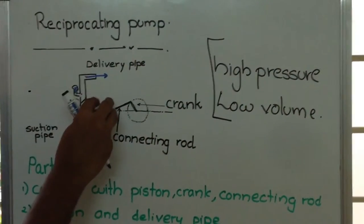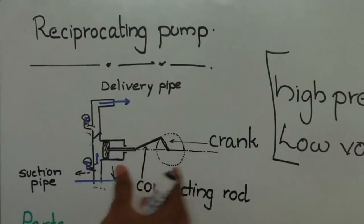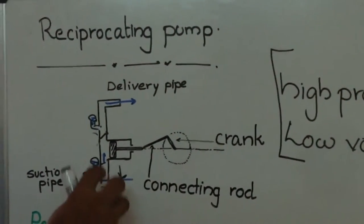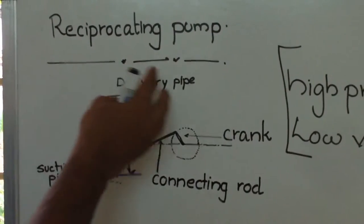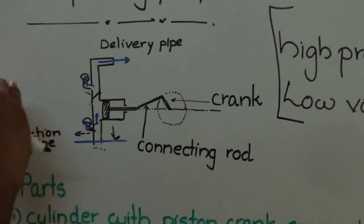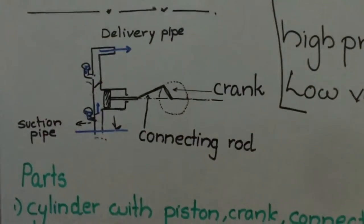The problem is that since the motion of the piston is pulsating, the velocity or discharge of water through the pipe keeps changing. We cannot obtain a constant discharge.